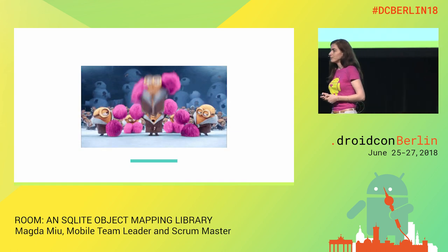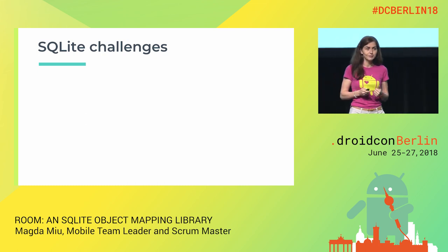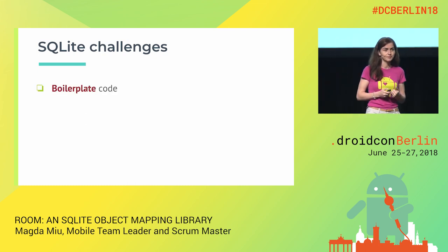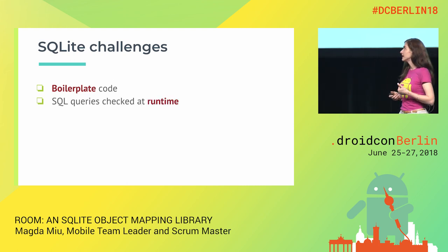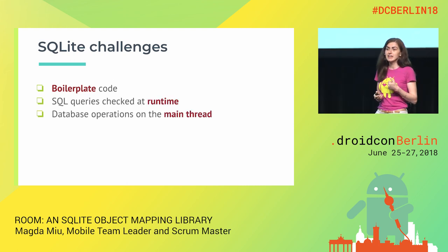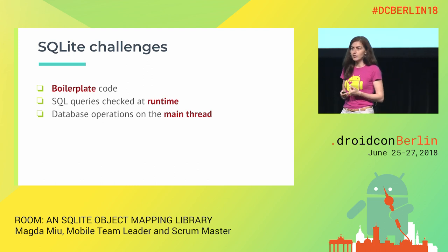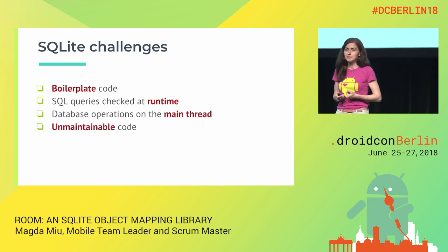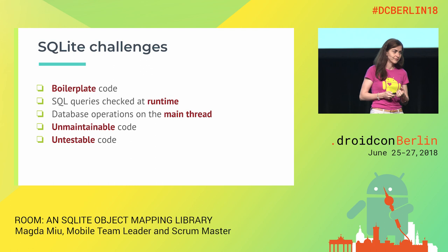So what are the main SQLite challenges? We have a lot of boilerplate code. We have SQL queries checked only at runtime. We have database operations on the main thread. And we have unmaintainable and untestable code.